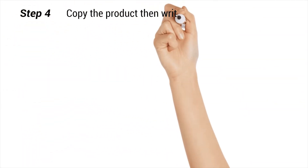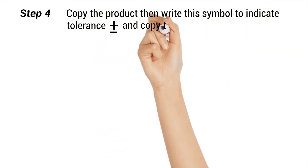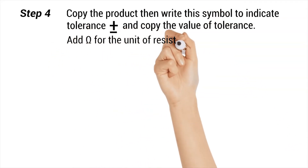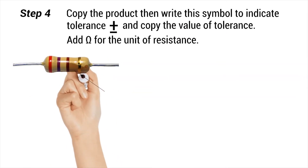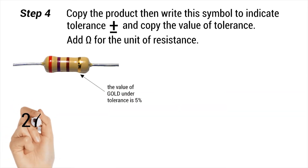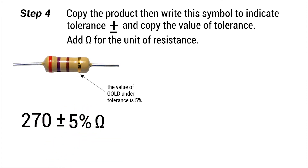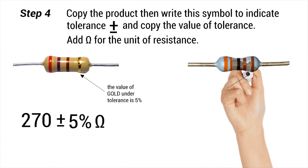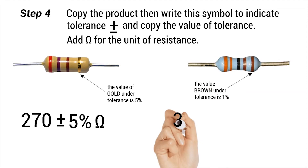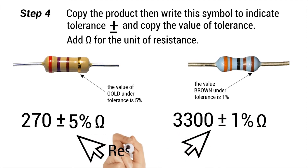Step four: copy the product, then write the symbol to indicate tolerance and copy the value of tolerance. Add the ohm sign for the unit of resistance. The value of gold under tolerance is 5%. We now have the resistance, which is 270 plus or minus 5% ohms. The value of brown under tolerance is 1%. The resistance for this five-band resistor is 3,300 plus or minus 1% ohms.